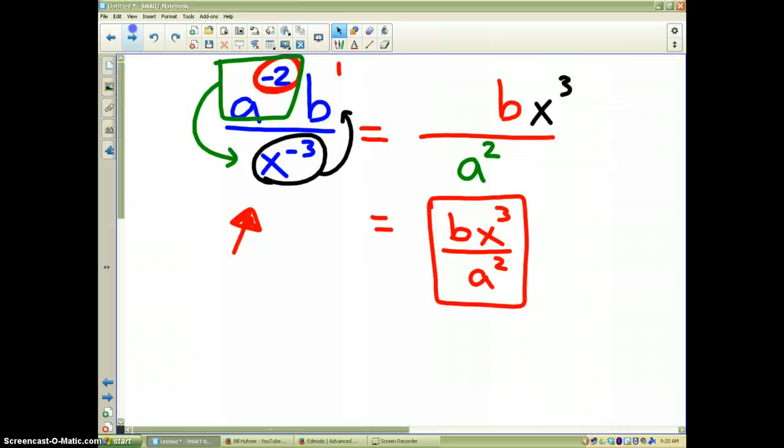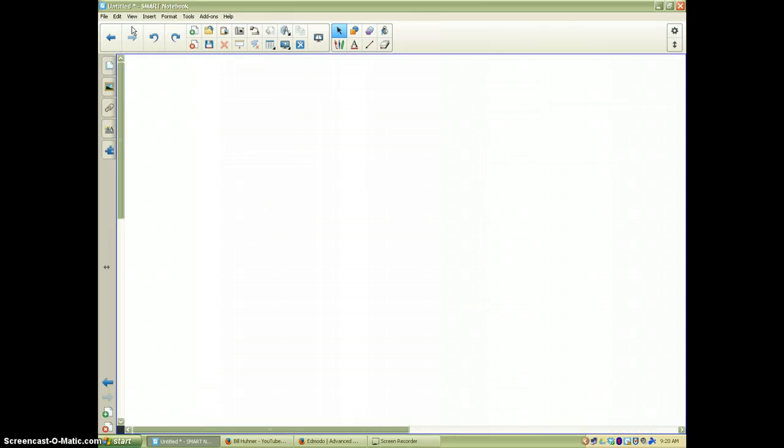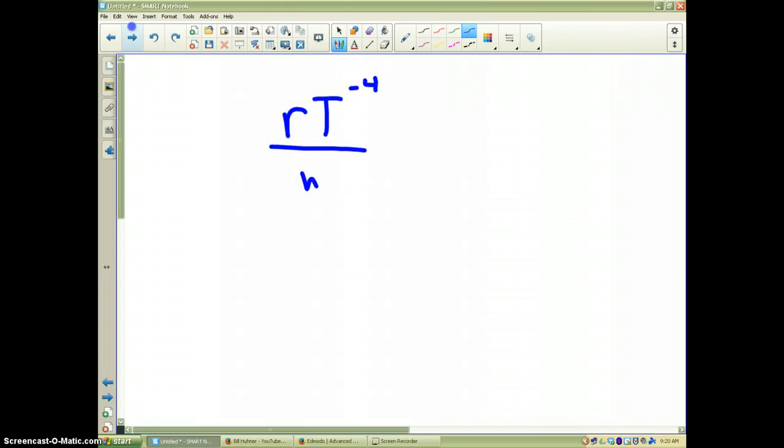Okay, now it's your turn. I'm going to clear the board, and I would like all of you to do this one. R, t to the negative 4 power over w to the negative 1 power. And, I'm going to put a 2 up here as well in the numerator. Stop the video and go ahead and simplify this problem and get rid of the negative exponents.